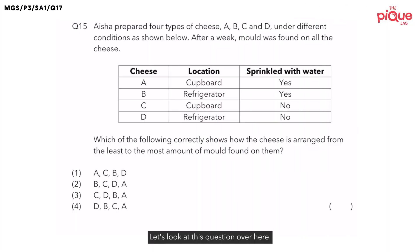Let's look at this question over here. Aisha prepared four types of cheese A, B, C and D under different conditions as shown below. After a week, mold was found on all of the cheese. Which of the following correctly shows how the cheese is arranged from the least to the most amount of mold?